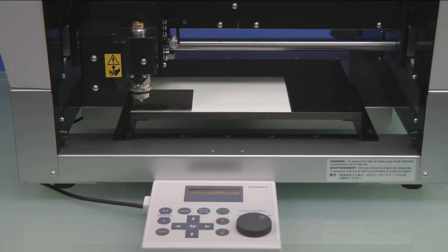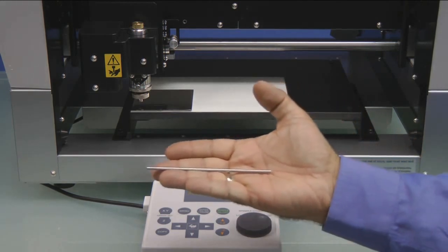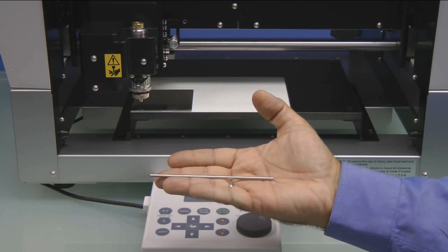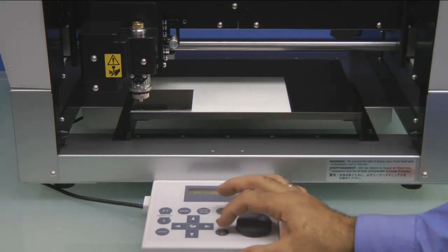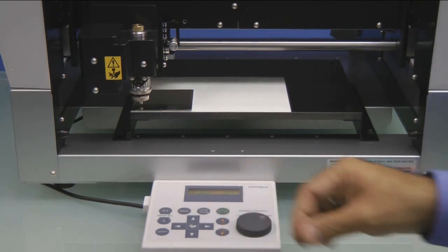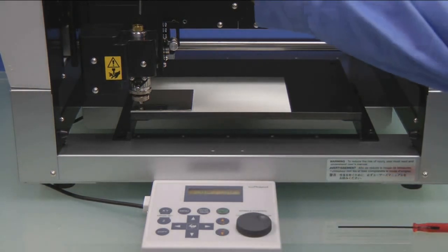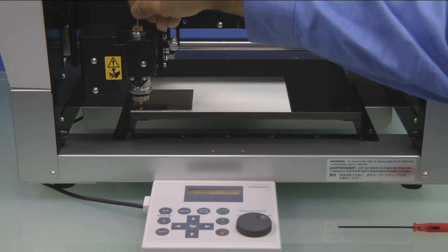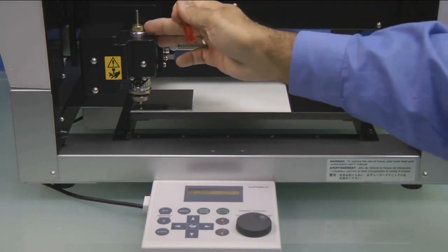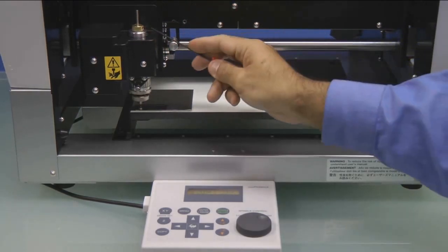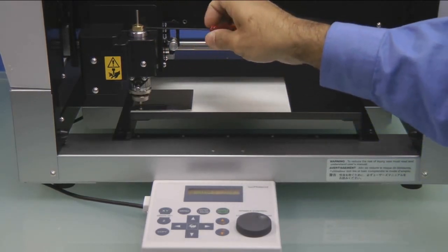At this point, we are going to prepare the optional Diamond Scribe tool. Using the supplied hex wrench, loosen the nut on the brass knob, and insert the optional Diamond Scribe tool from the top until it touches the material. Then tighten the screw on the brass cutter knob.